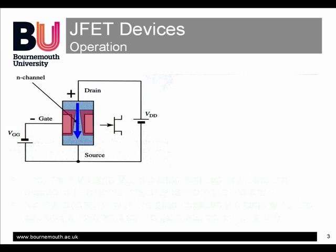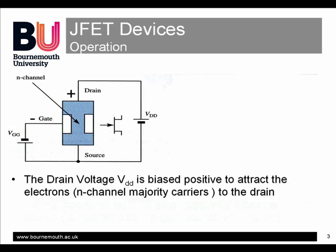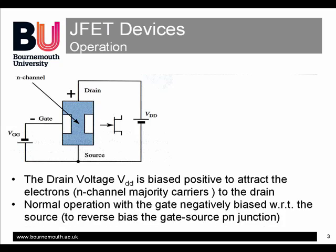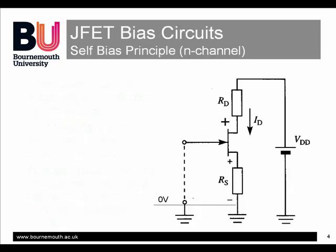To bias the N-channel JFET for normal operation, we need a positive voltage applied to the drain and a negative voltage on the gate. This slide shows the principle behind the self-biased circuit. We can make the drain positive with respect to the source using the supply rail, but the circuit has to make the gate negative with respect to the source.